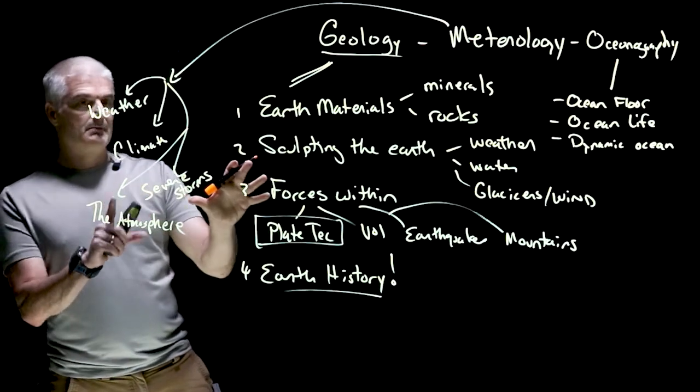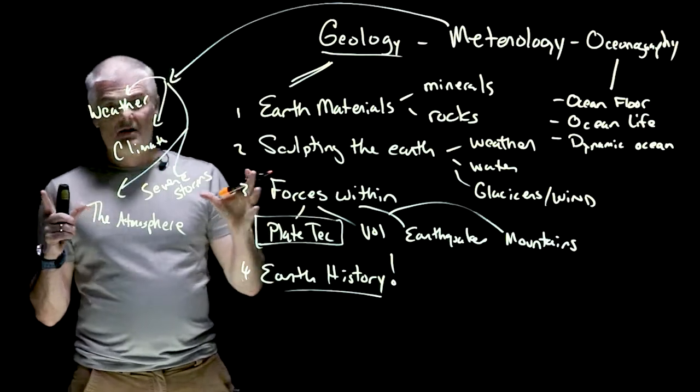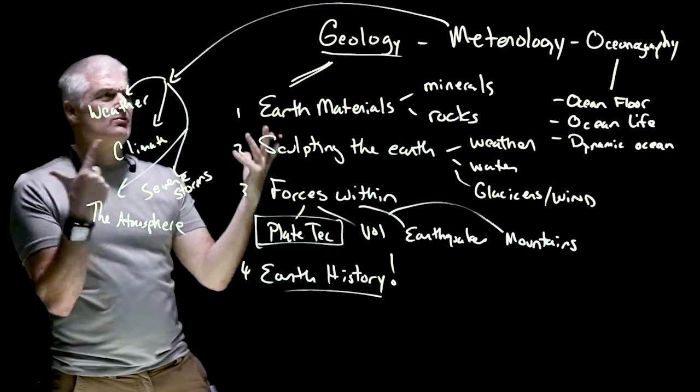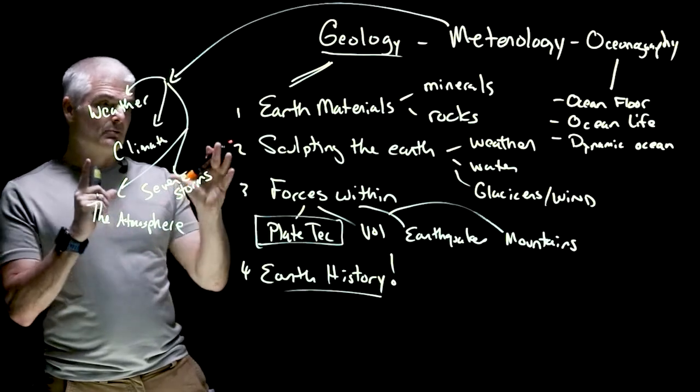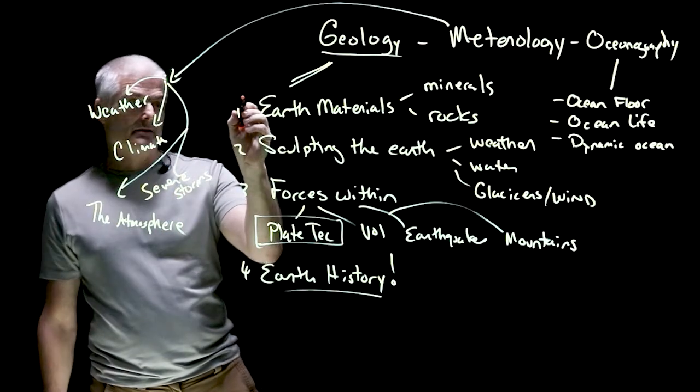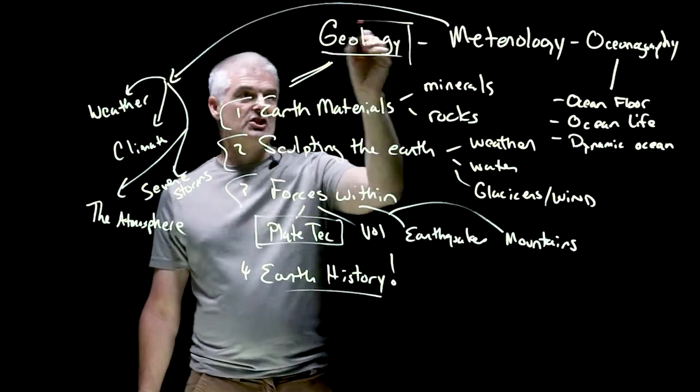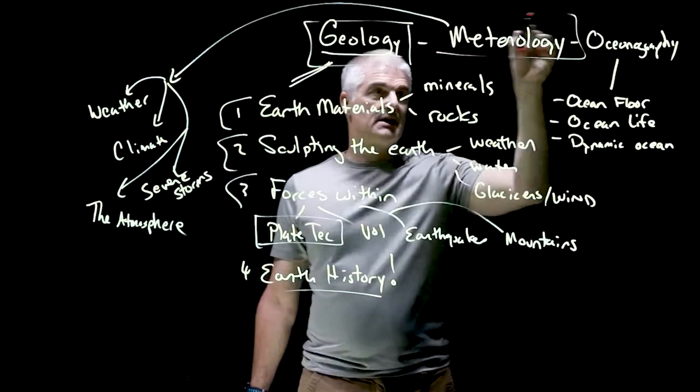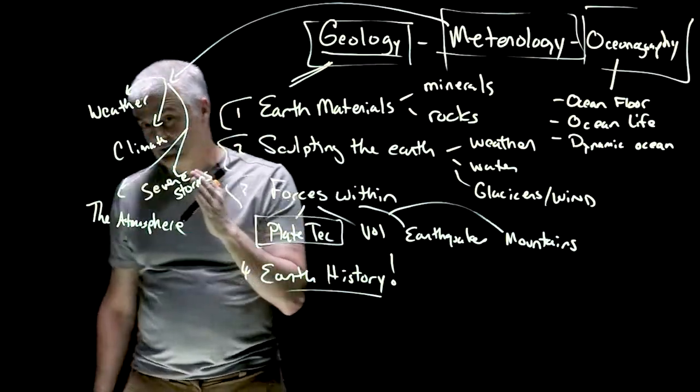So there's a lot of different things that we're going to talk about over the course of the year. So this is, if you will, the outline for the year. Right now we're just like, what is geology? What is earth science? So that's the whole topic of this first chapter. But then we're going to talk about each of these as a unit: earth materials, sculpting. So most of our year, we'll spend on the geology piece, we'll spend a little bit of time on meteorology and a little bit of time on oceanography.